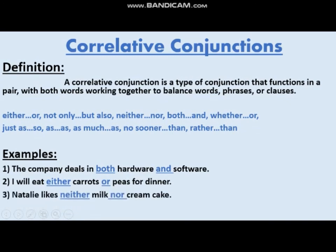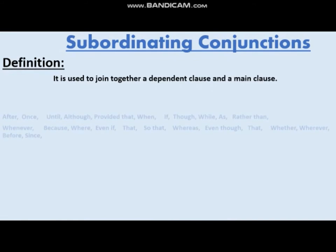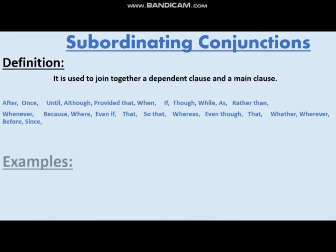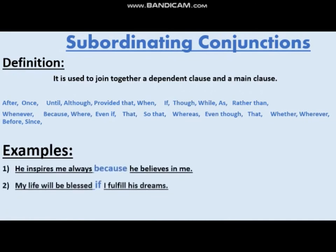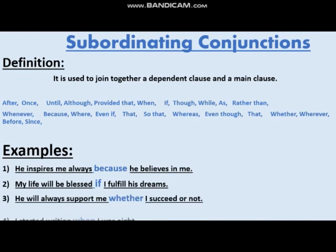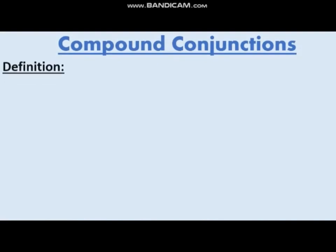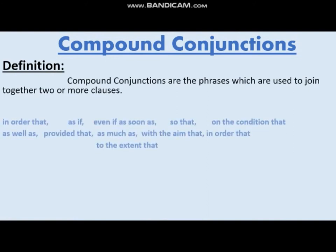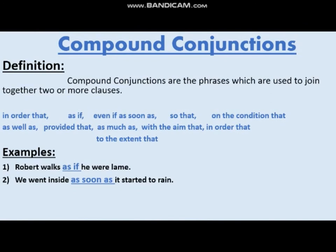Subordinating conjunction is the most important conjunction among all kinds. It shows time, place, and reason. A subordinating conjunction is used to join a dependent clause with a main clause. The main clause has its own meaning and can stand alone, but the dependent clause always depends on the main clause to give its meaning. The subordinating conjunction joins these two clauses together.